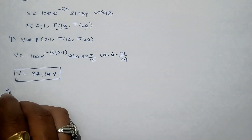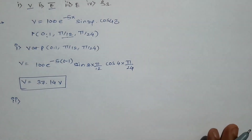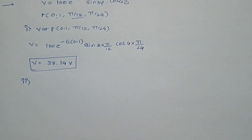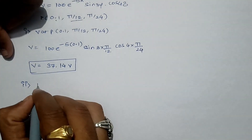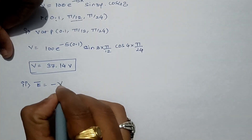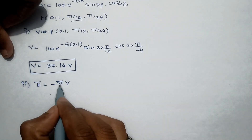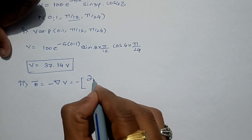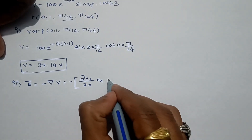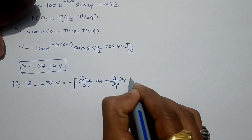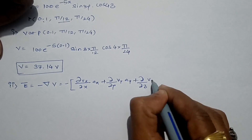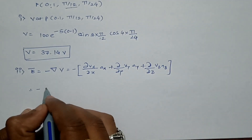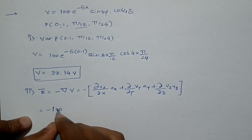Now for the second question, we find the electric field intensity E⃗, which is equal to minus del V, i.e., E⃗ = -(∂V/∂x · ax + ∂V/∂y · ay + ∂V/∂z · az). We need to differentiate V with respect to x, y, and z directions.